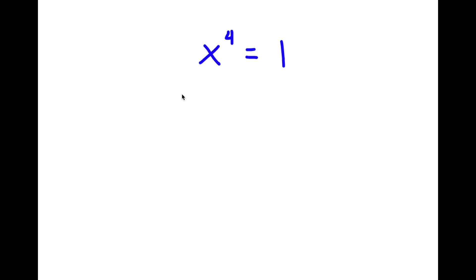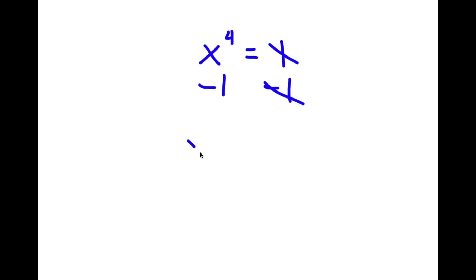In this problem, I have x to the power of 4 is equal to 1. I'm going to start by subtracting 1 on both sides. These two cancel out, and I get x to the power of 4 minus 1 is equal to 0.